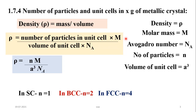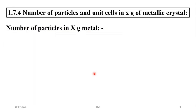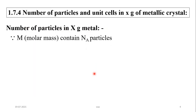So this relation we have already studied. If you rearrange this equation, then you can get M is equal to rho into A cubed into N_A divided by N. So today in this lecture we will calculate the number of particles in X grams of metal.